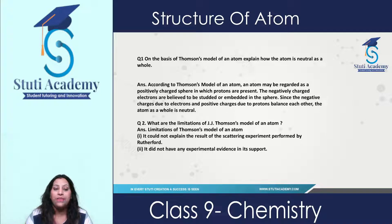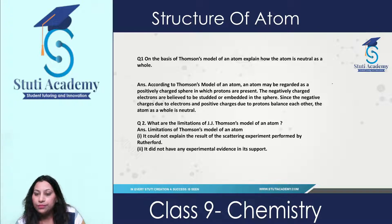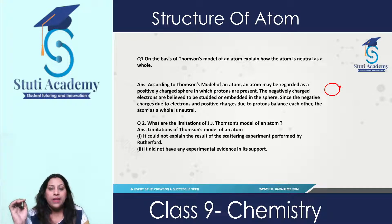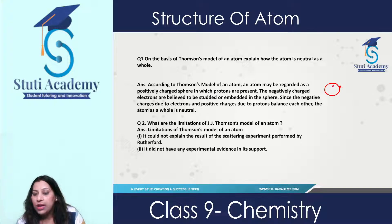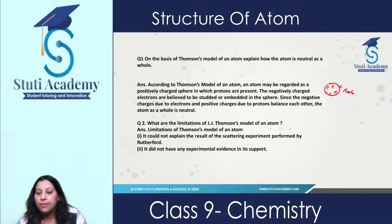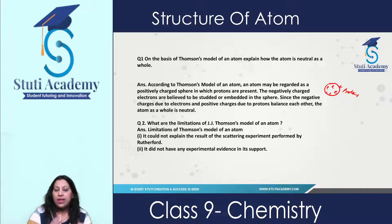So how can you present your answer? You can write: 'According to Thomson's model of an atom, an atom may be regarded as a positively charged sphere in which protons are present. The negatively charged electrons are embedded in this sphere. Since the negative charges due to electrons and positive charges due to protons balance each other, the atom as a whole is neutral in nature.' This was the observation of Thomson when he gave his model.